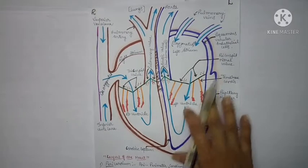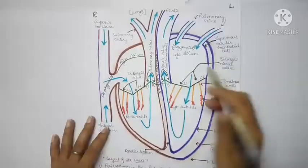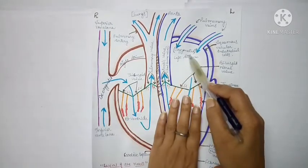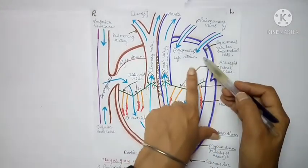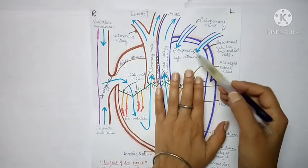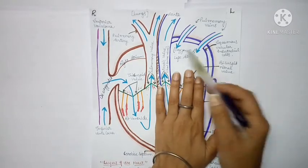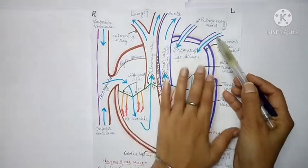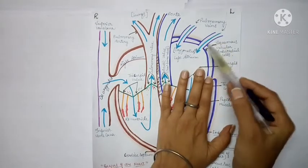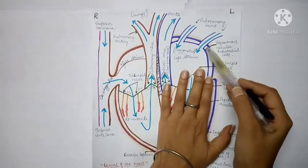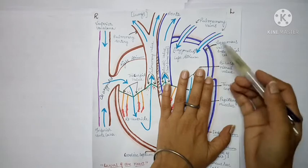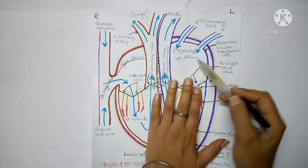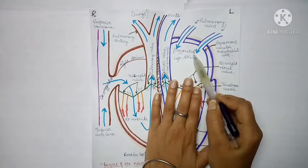Now let's talk about each chamber, starting from the left side. As you can see here, the upper chamber is the left atrium, which has two openings — these are our pulmonary veins. The word 'pulmonary' relates to the lungs. These two pulmonary veins bring blood into the left atrium. Which blood? Oxygenated blood.